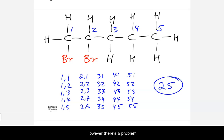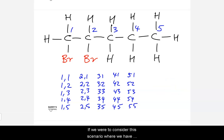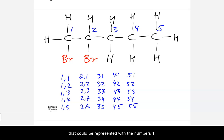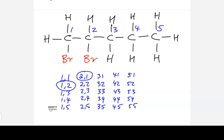However, there's a problem — see if you can spot the issue. There's actually more than one problem. The first is that the order in which we pick the position doesn't matter. So if we consider the scenario where we replace a hydrogen on the first and second carbon, that's represented as 1,2. But you can see it's also represented as 2,1 — so these are duplicates of each other. We are double counting.